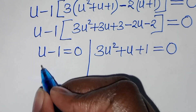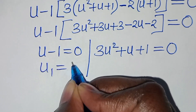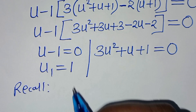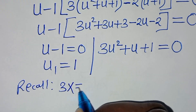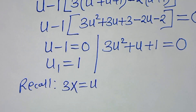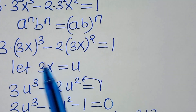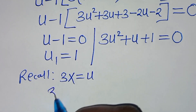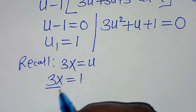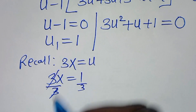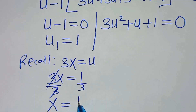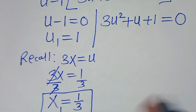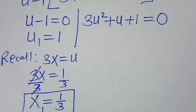So we have two parts. From the first part, u minus 1 equals 0, so u₁ equals 1. Recalling that we let 3x equal u, this implies 3x equals 1. Dividing both sides by 3, x₁ equals 1 over 3. Let's proceed to the second part.